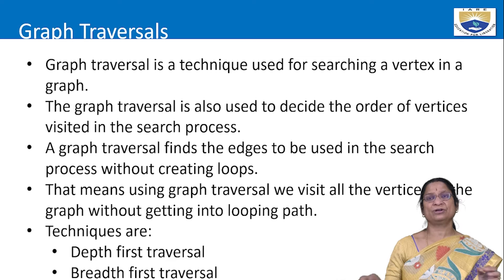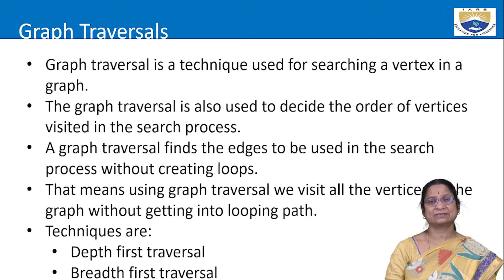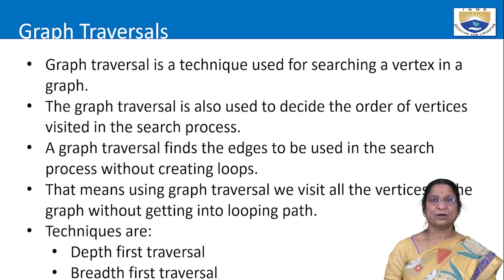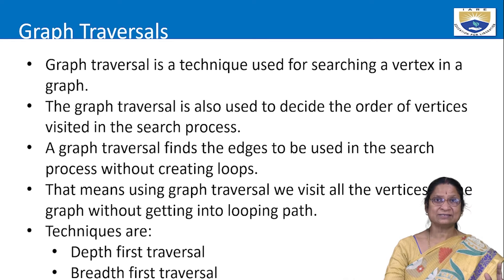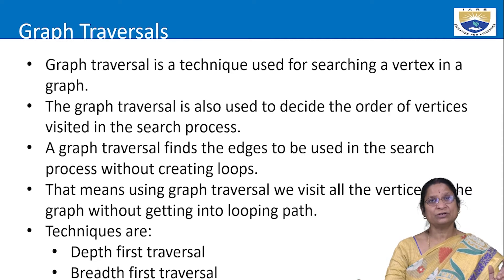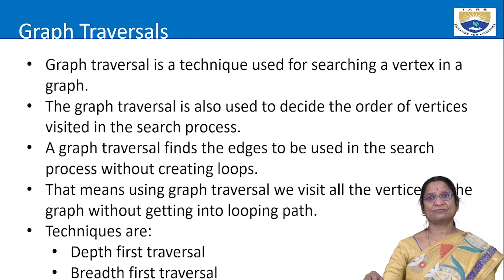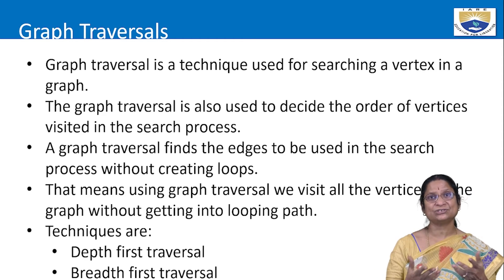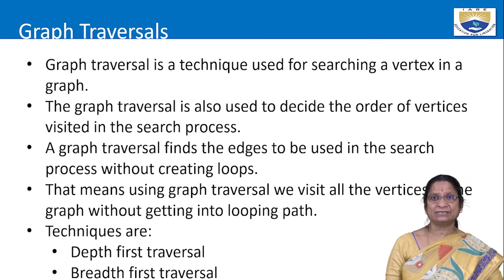Coming to traversal: each element must be accessed exactly once. In graph traversal, each node must be accessed once. These traversal techniques are also used for searching — searching is a kind of traversal where we stop when the element is found. An unsuccessful search is equivalent to a full traversal. That is why whatever techniques are used for traversal can also be used for graph search.